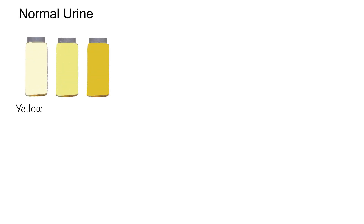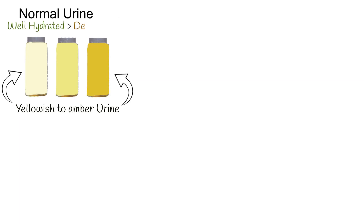Normal urine color can be different. Usually it's pale yellow to darker yellow. When a person drinks enough water, urine color is more pale yellow. If the organism is dehydrated, urine color becomes darker. Sometimes urine color can indicate a pathological process in the organism or disease. We will discuss the most common colors and associated disorders.